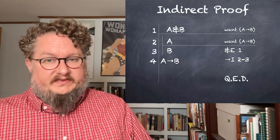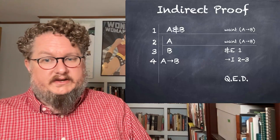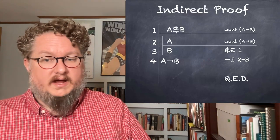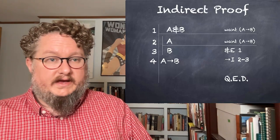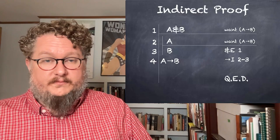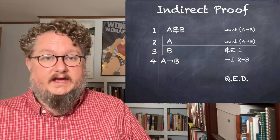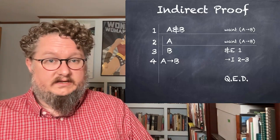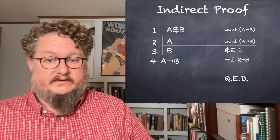This specific kind of indirect proof we might call a conditional proof, and it's the primary way we introduce conditionals and also biconditionals. Here we assume A, we derive B, and that gives us the conditional at the end.